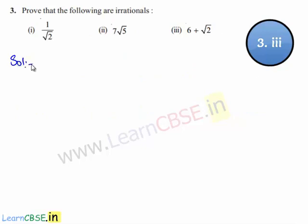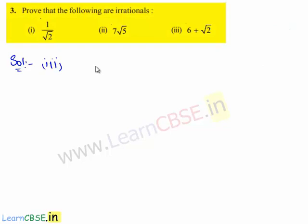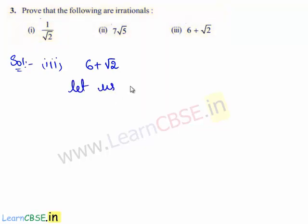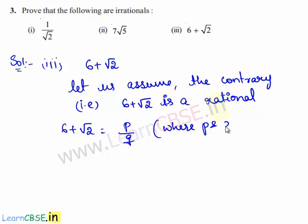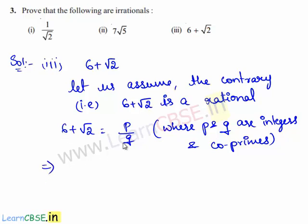Now let us move on to the solution for the third bit. We need to prove that 6 plus root 2 is an irrational number. Let us assume the contrary — that is, 6 plus root 2 is a rational number. Since we have assumed that 6 plus root 2 is a rational number, it can be written in the form of p upon q, where p and q are integers and also co-primes. This implies, on transposing 6 to the right-hand side, root 2 is equal to p upon q minus 6, which gives root 2 equals p minus 6q upon q.